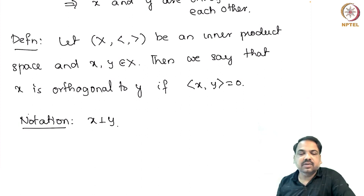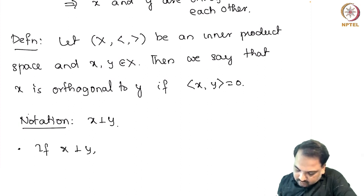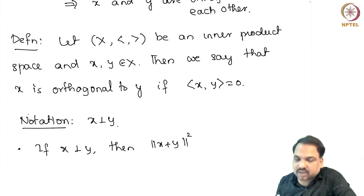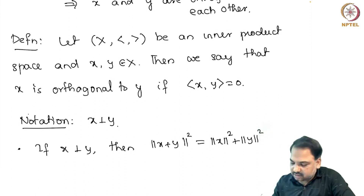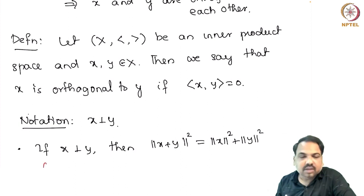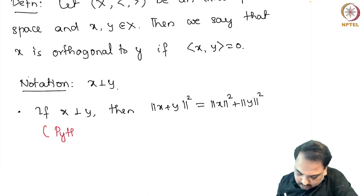Now, what is the advantage of having orthogonal vectors? An immediate observation is that if x is orthogonal to y, then we can look at ‖x + y‖². By expanding using the inner product, we can easily show that this equals ‖x‖² + ‖y‖², because the inner product ⟨x, y⟩ is 0. This is exactly the generalization of the Pythagorean property from Euclidean geometry. So this is called the Pythagorean property.